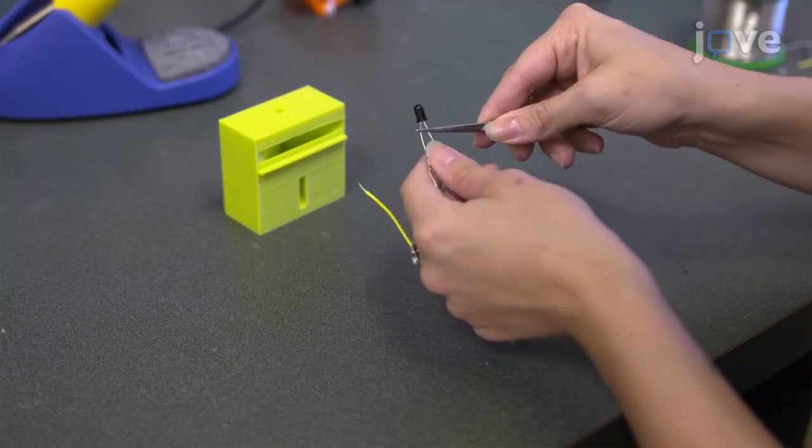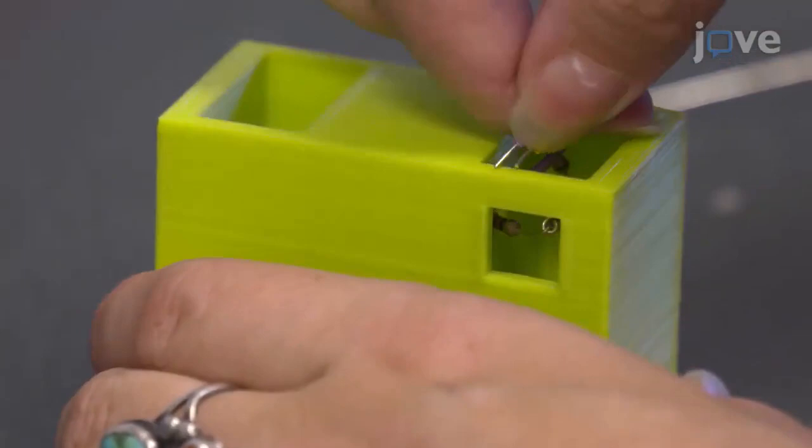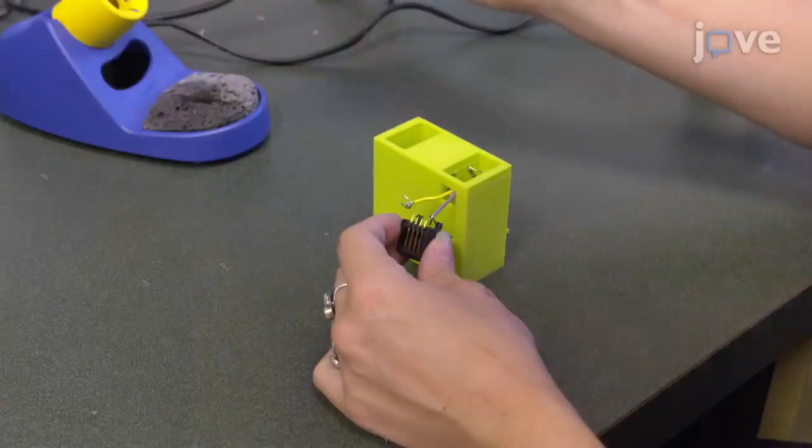Carefully insert the detector into one socket of the collector manifold and the emitter into the second socket. Both components should fit snugly. Feed the detector wires through the cabling channel and pull both wires through the access hole.